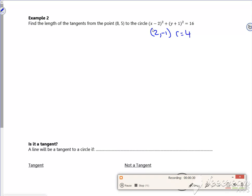So what have I got then? So I've got a circle. It has a center at (2, -1). I have a point which is (8, 5), so it's up here somewhere. So there's the point (8, 5), and I want the lengths of the tangents.